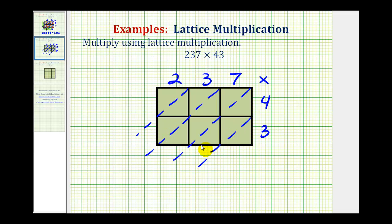Now we can start multiplying. For this cell here, we'd have seven times three — that's 21. Here we have seven times four — that's 28. For this cell, we would have three times three — that's nine, so zero, nine. Here we would have three times four — that's 12, one, two. Here we would have two times three — that's six, so zero, six. And here we'd have two times four — that's eight, so we have zero, eight.